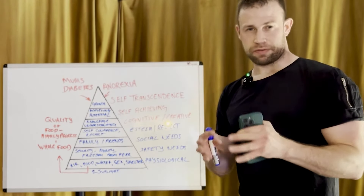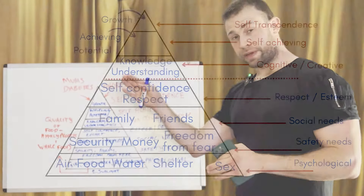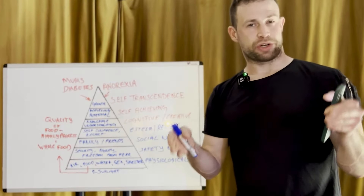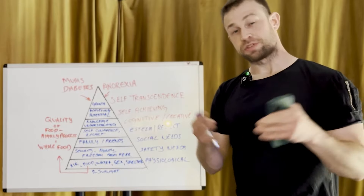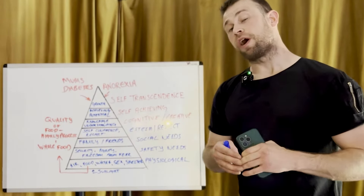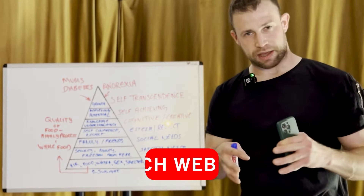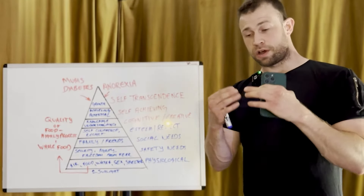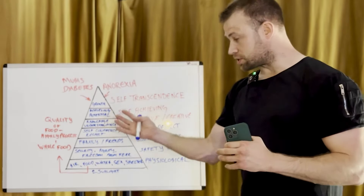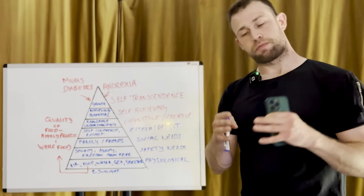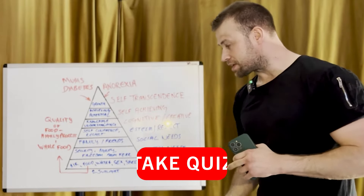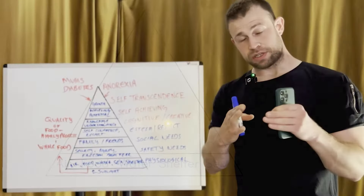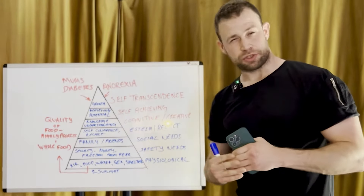Today, Maslow's hierarchy of needs is often represented in a pyramid, starting from the bottom and working all the way to the top — what an individual might want to achieve, such as a goal. Maslow's theory is not necessarily unique to him; other authors and cultures have created many similar structures to this pyramid.